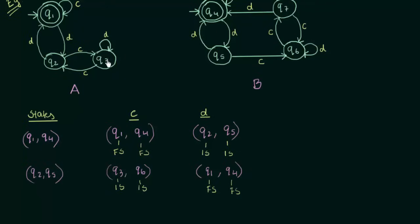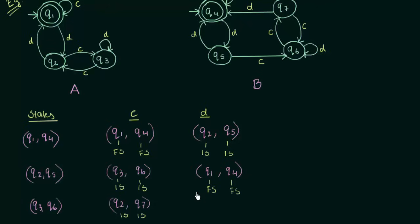Next, let's check the pair q3 and q6. On input c, q3 goes to q2 and q6 goes to q7 — both are intermediate states. On input d, q3 goes to q3 itself and q6 goes to q6 itself — both are also intermediate states. So all pairs obtained so far are either both intermediate states or both final states, meaning they remain equivalent. But q7 is a new state that has appeared.